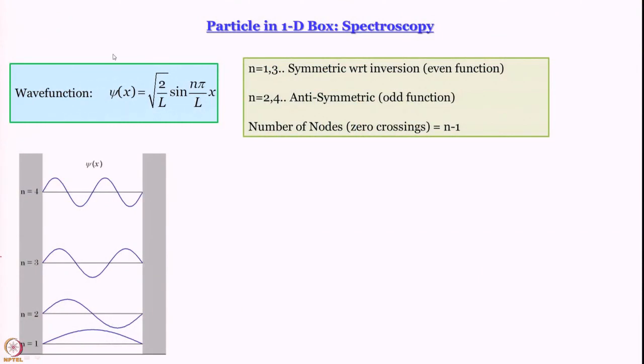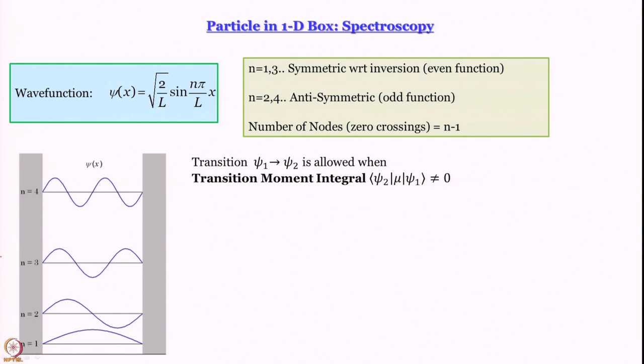Now comes the discussion of spectroscopy. Spectroscopy is the interaction of radiation with matter, and essentially it involves transition from one energy level to another. Quantum mechanics has its roots in spectroscopy. As a colleague told me many years ago, spectroscopy is just quantum mechanics in action. All the calculations we do in quantum mechanics are manifested in the interaction of radiation with matter, because that is the only way to probe the energetics of a system experimentally, and quantum mechanics is all about energy levels and wave functions.